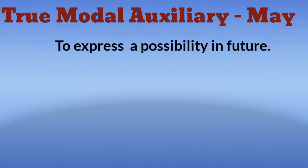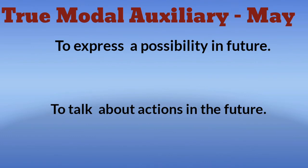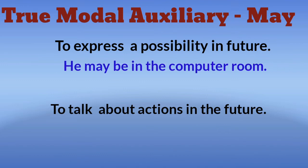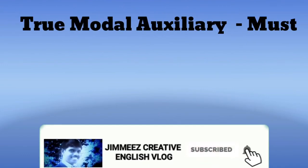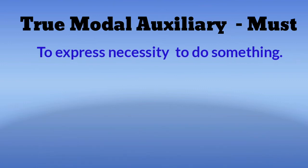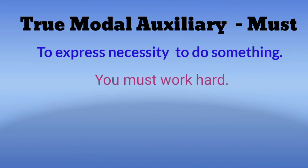The use of modal auxiliary 'may': to express a possibility in the future, and to talk about actions in the future. For example: 'He may be in the computer room' — 'may' denotes a possibility in the future. 'I may go to Hyderabad' — 'may' denotes talking about actions in the future. The use of true modal auxiliary 'must' is to express necessity to do something. For example: 'You must work hard' — 'must' denotes necessity. Remember: will, shall, can, and may are used to express future present.